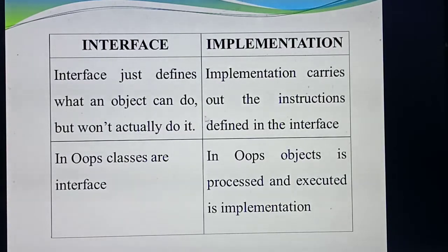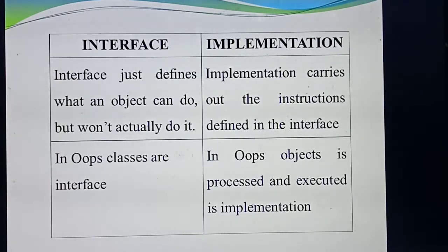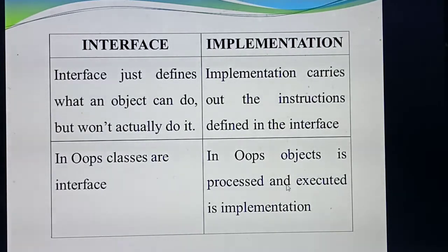Second point: in object-oriented programming language, class is the main concept of interface. Inside the class, it explains only the functions. In OOP, which one is the important concept for interface? Classes. But for implementation, the important concept is objects. If you are using the class concept in programming, you should create one object in the main function for the class. In object-oriented programming, object is the main concept — how the object is created and executed.